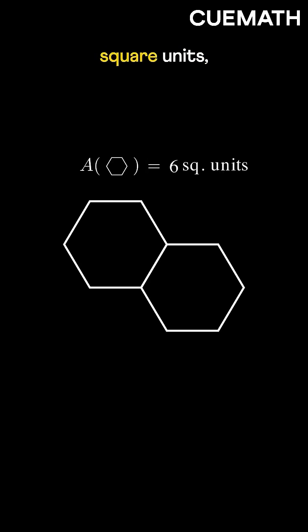Two regular hexagons, each with an area of six square units, are placed inside a rectangle. Can you find the shaded area?